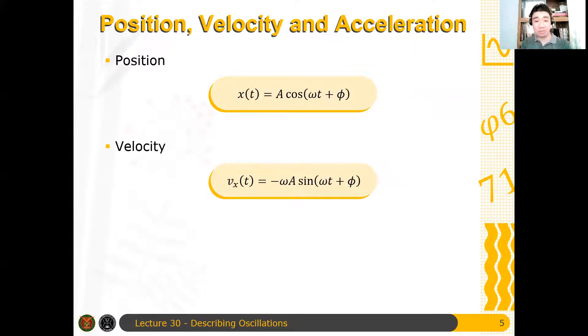After that, we also obtained the expressions for the position, velocity, and acceleration. Since we have an oscillating system, we expect that the position as a function of time should be sinusoidal. Hence, we have a cosine function for the position, by convention. We can always define it as a sine, but by convention, we use the cosine.